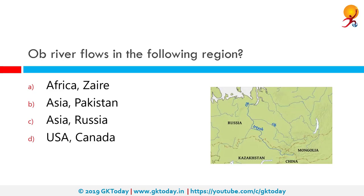The Ob River flows in which of the following regions? The correct answer is Asia and Russia. The Ob River flows through Russia and into Kazakhstan, then China. It is a major river in western Siberia, Russia, and is the world's seventh longest river. It forms at the confluence of the Biya and Katun rivers, which have their origins in the Altai Mountains. It is the westernmost of the three great Siberian rivers that flow into the Arctic Ocean.